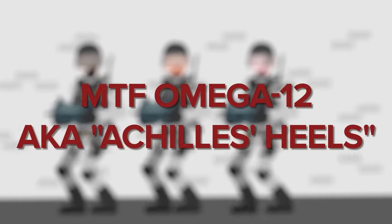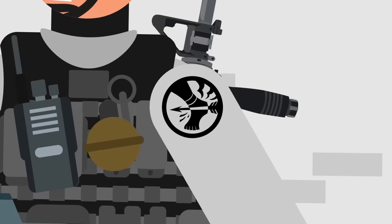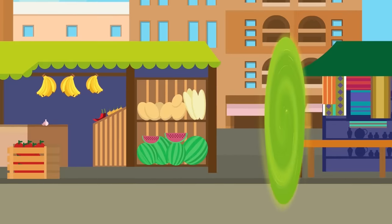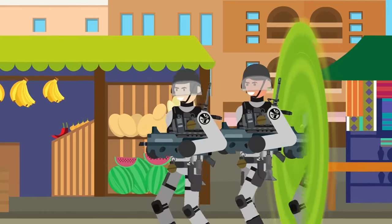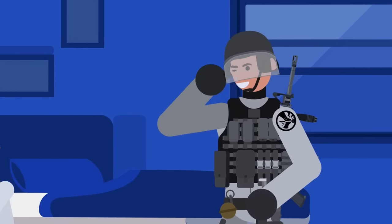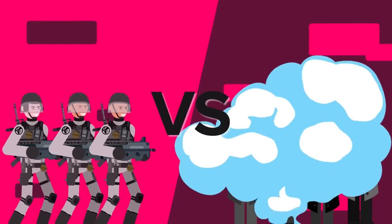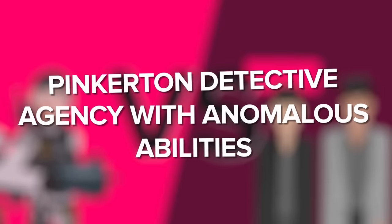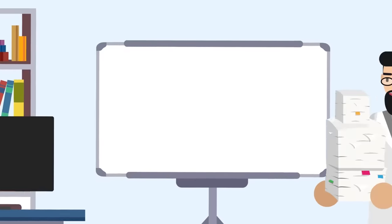And last but not least, MTF Omega-12, aka Achilles' Heel, is an anomalous task force and these powerful reality warpers from another dimension hunt down dangerous and powerful reality warpers in ours. You can thank these guys for every single day that our reality continues on as normal, or whatever normal means now. They're enemies of SCP-3155, members of the iconic Pinkerton Detective Agency with anomalous abilities relating to combat.